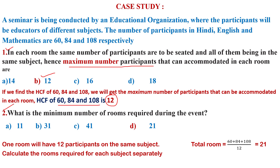Second question: what is the minimum number of rooms required during the event? If one room will have 12 participants of the same subject, we have to calculate the rooms required for each subject separately. That means total rooms: 60 divided by 12 for one subject, 84 divided by 12 for the second subject, and 108 divided by 12 for the third subject. Adding these gives 21 rooms required. Option D is correct.